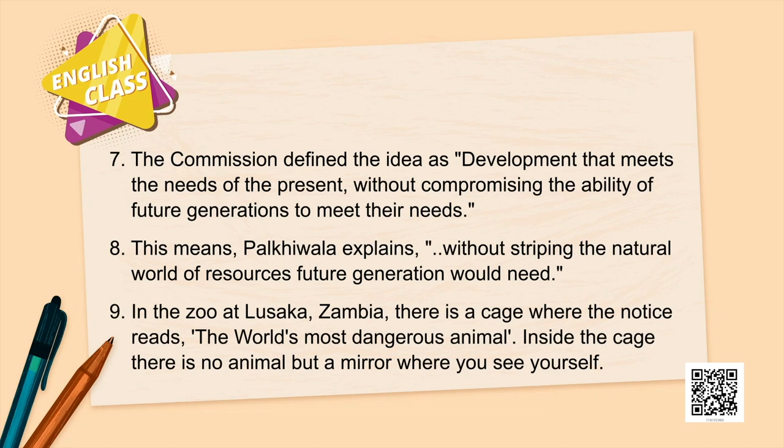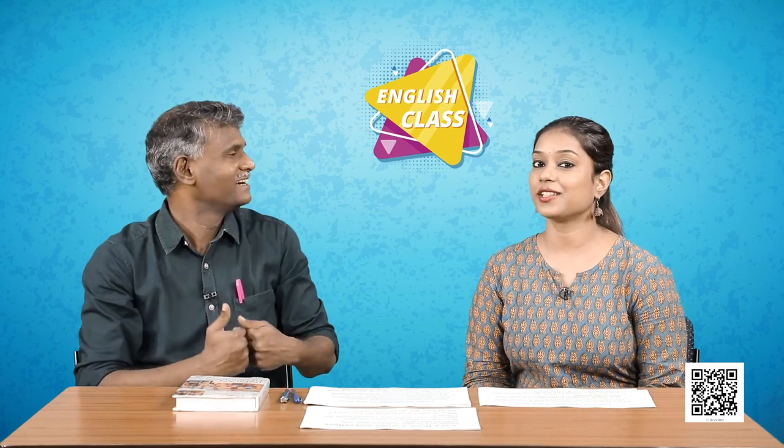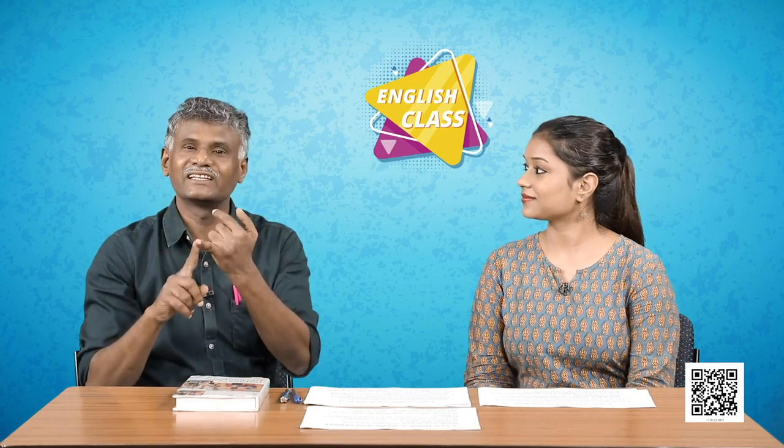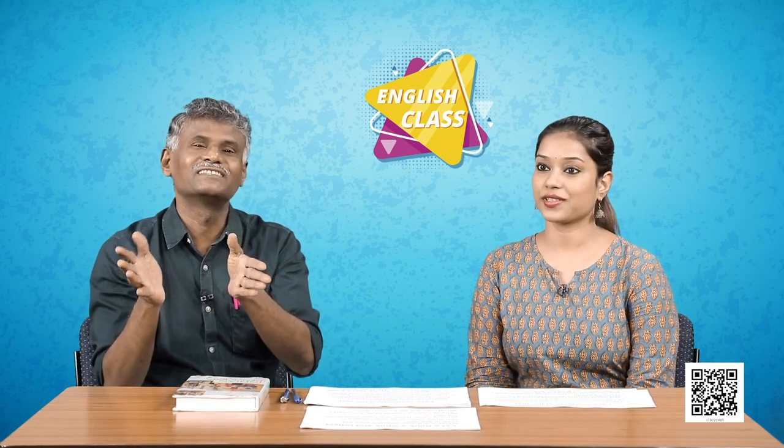Palkhivala gives a very nice example. In the zoo at Lusaka, Zambia, there is a cage with a notice reading 'the world's most dangerous animal.' Inside the cage there is no animal, but a mirror — where you see yourself. That means humans are the most dangerous animals. Every other animal — dog, tiger, monkey, elephant — does its own job, but humans do everyone else's job and snatch away others' food.